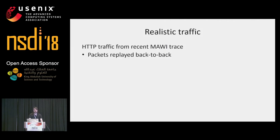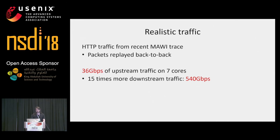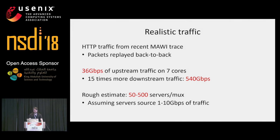For realistic traffic, we looked at the recent MAUI trace and replayed upstream HTTP packets back to back. Our muxes can do 36 gigabits per second of upstream traffic on seven cores. Since downstream traffic is 15 times larger, that translates to roughly 540 gigabits per second. Assuming each server can source anywhere from 1 to 10 gigabits per second, we estimate one mux can cater to anywhere from 50 to 500 servers.